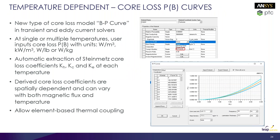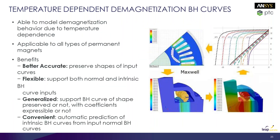For motor core loss, you can now define temperature-dependent core loss curves as PV curves in Maxwell. Once entered, you can define curves for different temperatures, and Maxwell automatically extracts estimated core loss coefficients for each temperature-dependent curve. Additionally, temperature-based demagnetization of BH curves is now supported, allowing more accurate simulation of demagnetization behavior across different temperatures.